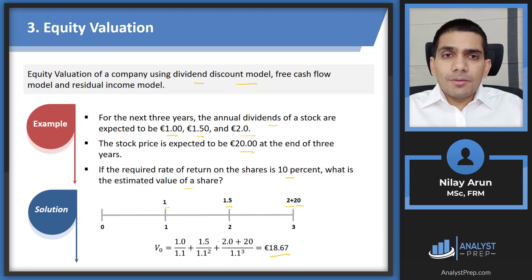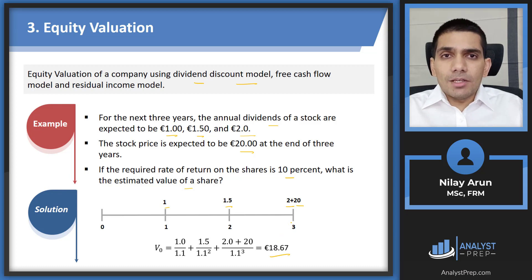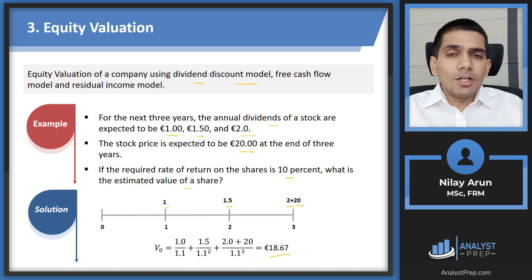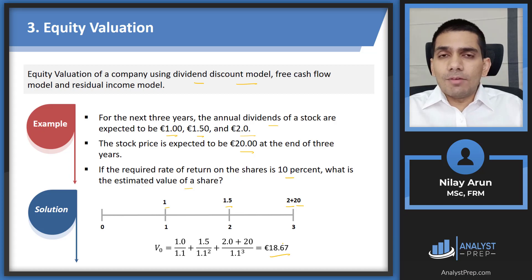According to our assumptions, the stock should be valued at €18.67 — this is the fundamental or intrinsic value, not the market value. If the market price is higher than €18.67, the stock is overvalued and we should not buy it. If it's trading at less than that, it's undervalued and we should go ahead and buy the stock. That's how we use the timeline for equity valuation.